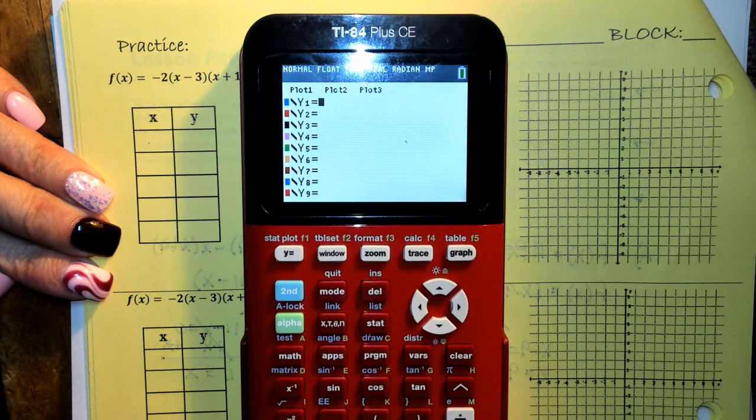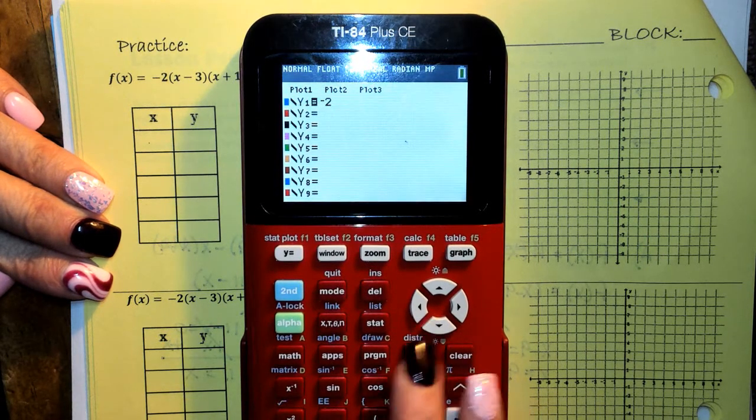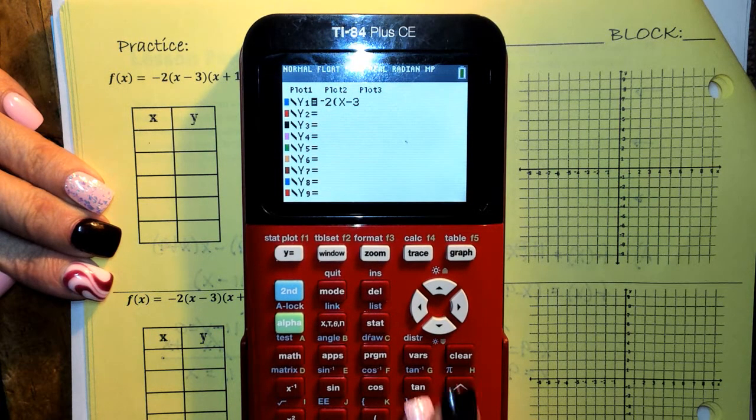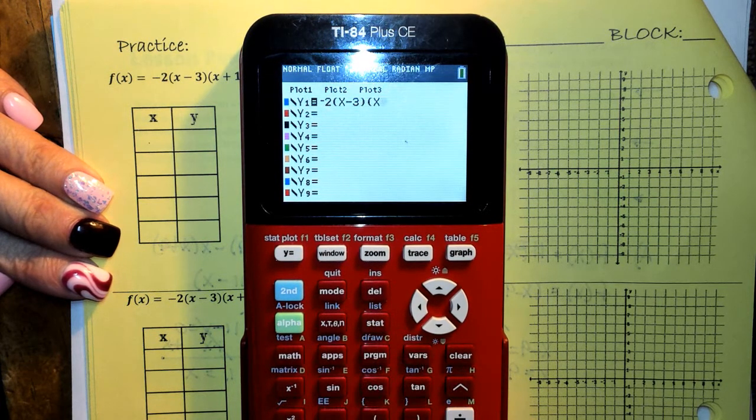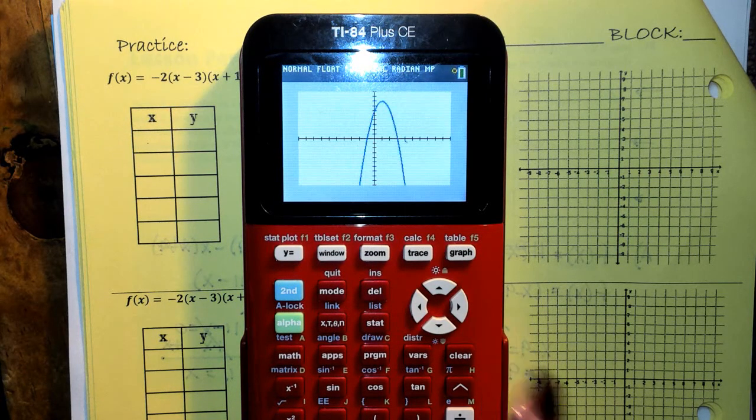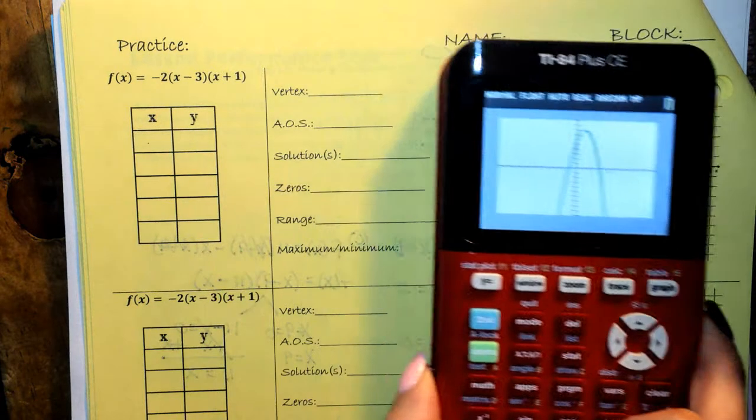Let's just go to y equals, and let's put in negative 2, parentheses, x minus 3, times x plus 1. Let's just graph it so we can see what it looks like. Okay, so I can see everything pretty clear on there.